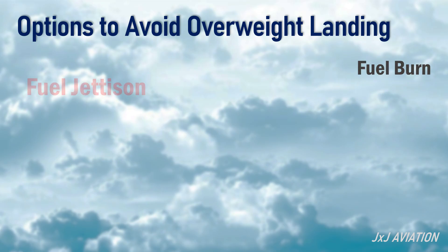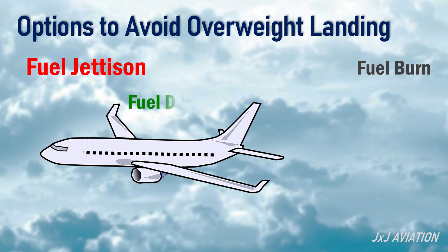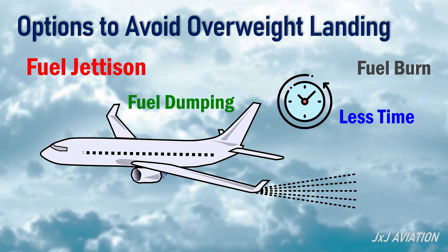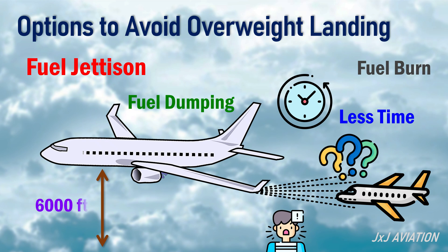Fuel Jettison, also known as fuel dumping: the fuel is dumped overboard via jettison pipes. This option takes less time than burning fuel; however, it can impact other aircraft or people on the ground. Fuel jettison must be done when flying higher than 6,000 feet. At these levels, the fuel will evaporate before it reaches the ground.